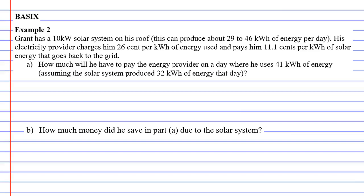In this video, we are going to complete example two, and we're going to look at the money you can save by having solar panels on your roof. Grant has a 10 kilowatt solar system on his roof. Now, what does that mean?